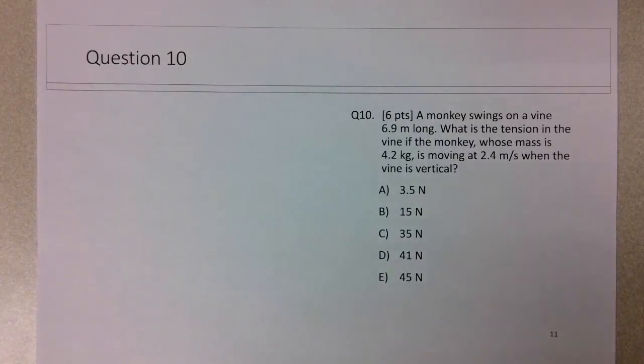Okay, so question 10, final exam review. The context here is a monkey swinging on a vine, 6.9 meters long. I'm looking for the tension in the vine if the monkey whose mass is 4.2 kg is moving at 2.4 meters per second when the vine's vertical. So, reading this question,